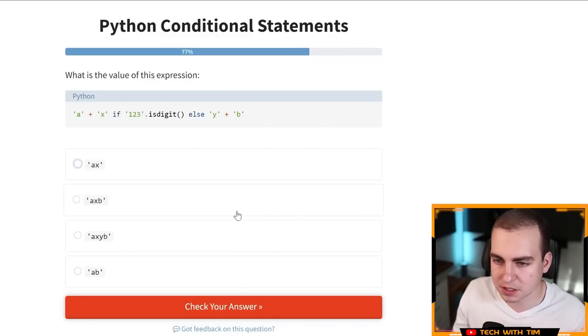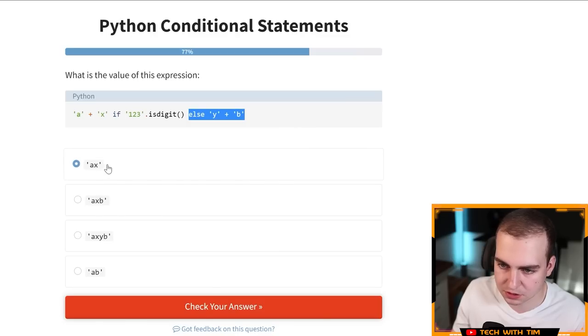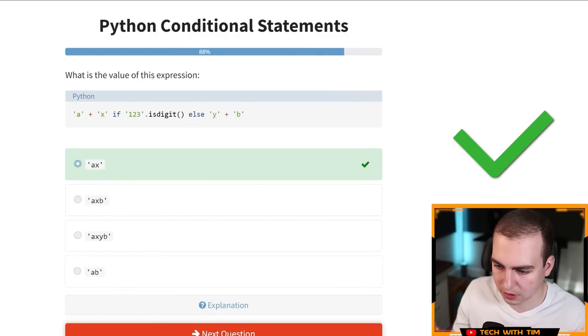All right. What is the value of this expression? A plus X. If one, two, three dot is digit else Y plus B. Yeah. See, you don't actually have the, what do you call it? The colon here, right? The else doesn't have the colon. Okay. So a plus X, if one, two, three, okay. What is the value of this expression? Yeah. So that is a digit. Otherwise this, so I think it's just a X, right? I don't know why it would be anything else than that. Okay. Very good.